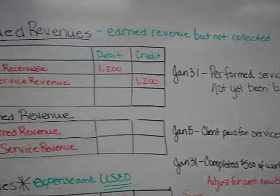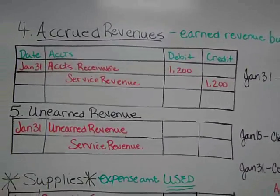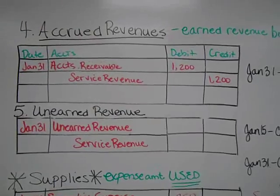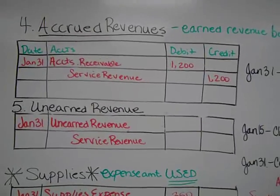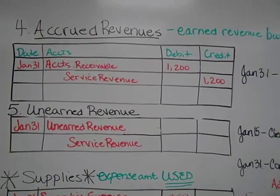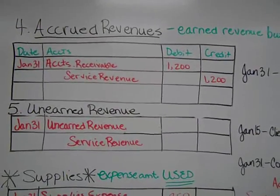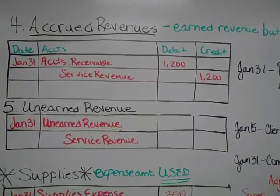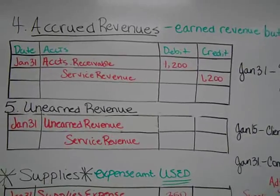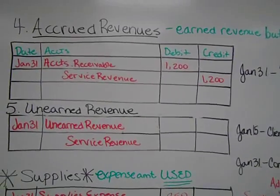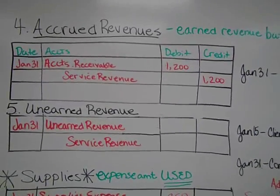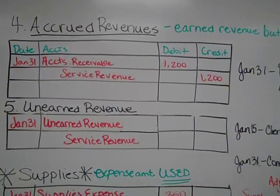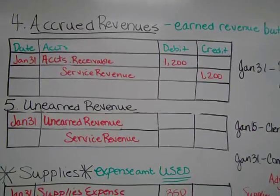So on January 31st we must record that we have earned this revenue — that is the whole basis of accrual accounting. We will debit accounts receivable, indicating that our customers will pay us later, and we will credit service revenue.